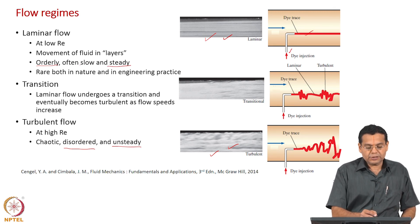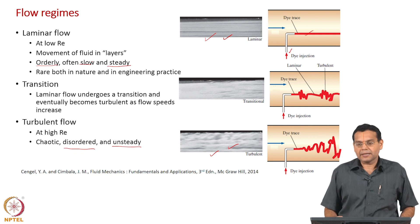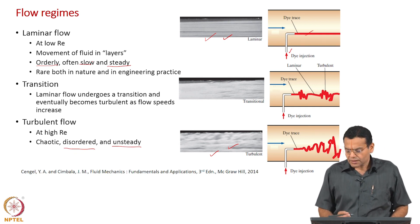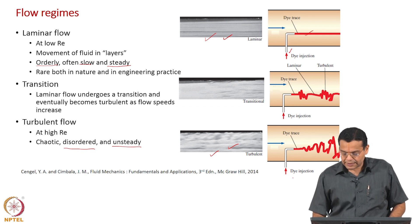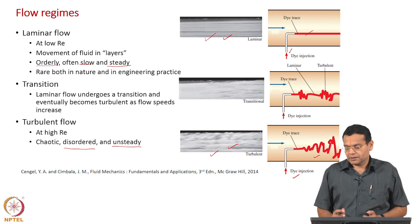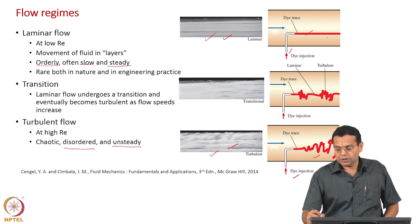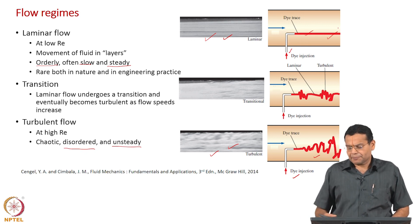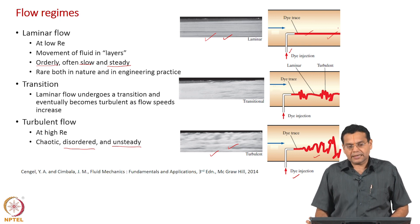At high Reynolds number, if you inject a dye, look at the streak line — it is completely zigzag and disordered, opposite to what you observed in laminar flow. Rapid mixing of fluid elements takes place, resulting in such a streak line.